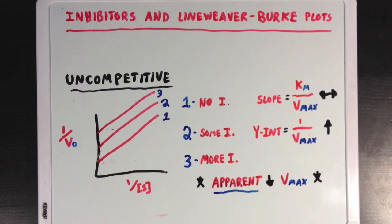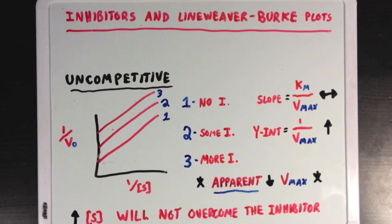So since you're decreasing Vmax as you add more inhibitor, even if you really increase the substrate concentration, you won't be able to overcome the effects of the inhibitor. But the enzyme will still be effective at low substrate concentrations, even with the inhibitor around, since there isn't that same increase in slope.